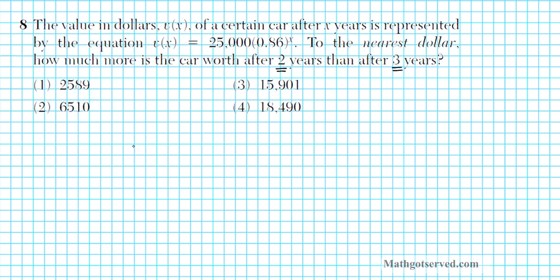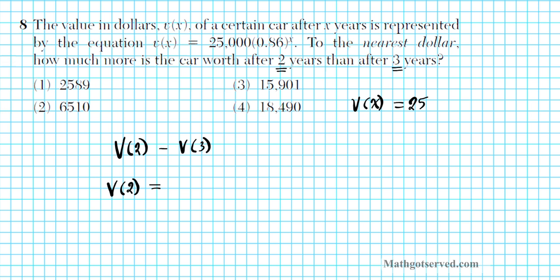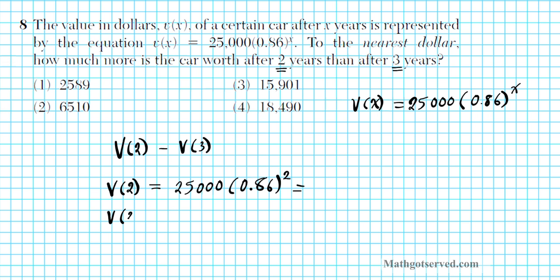All we have to do is find V of 2 and V of 3, then subtract. So the difference is V of 2 minus V of 3. V of x equals 25,000 times 0.86 to the x. For V of 2, substitute x with 2; for V of 3, substitute x with 3. I'll use a TI-83 Plus calculator for the computation.